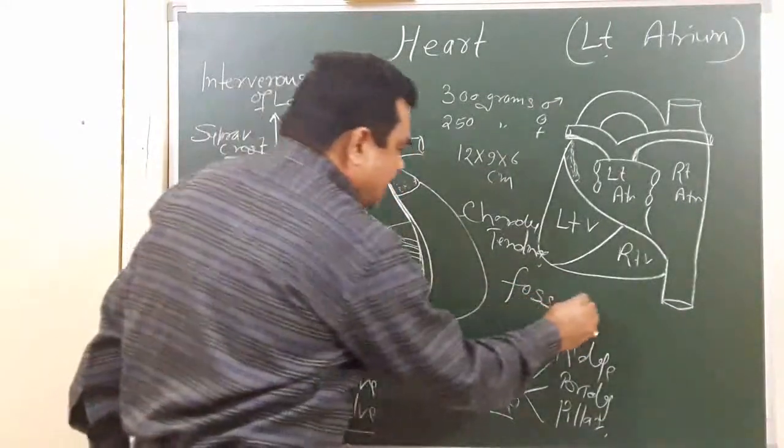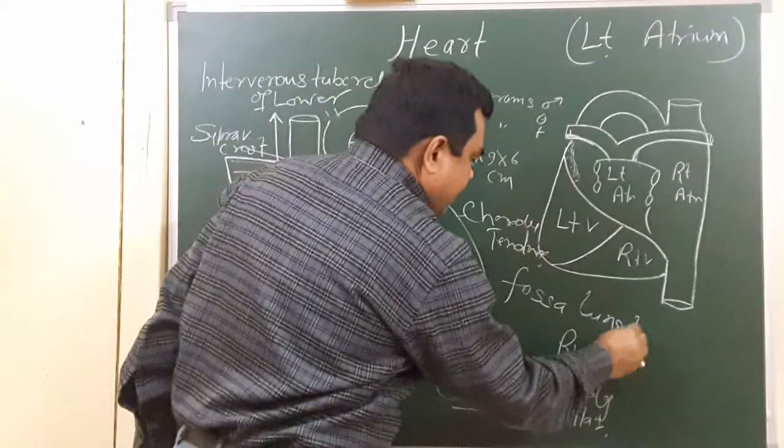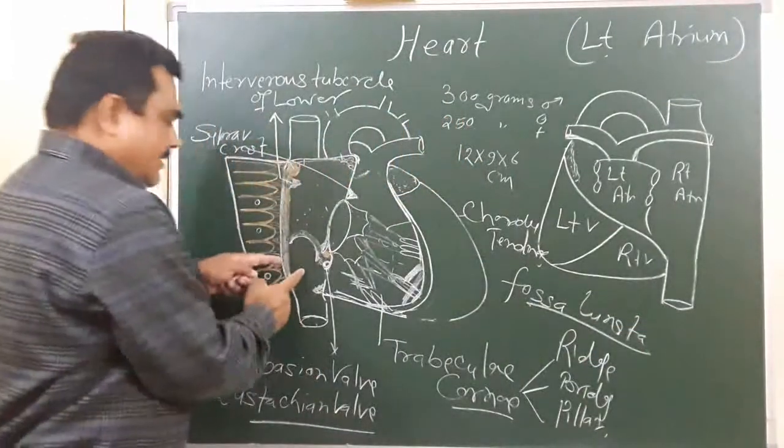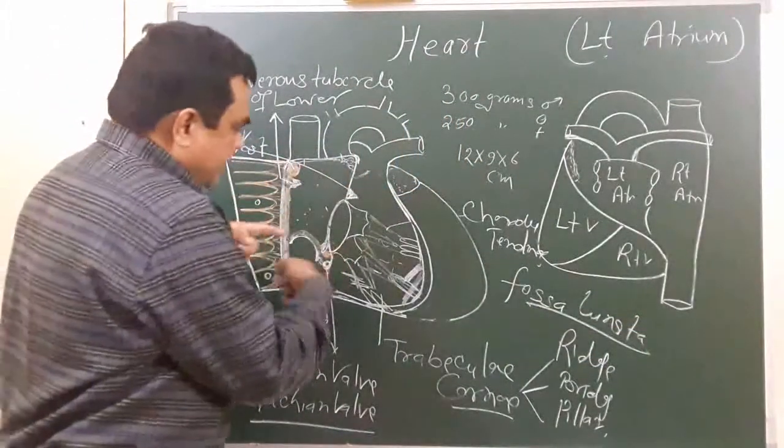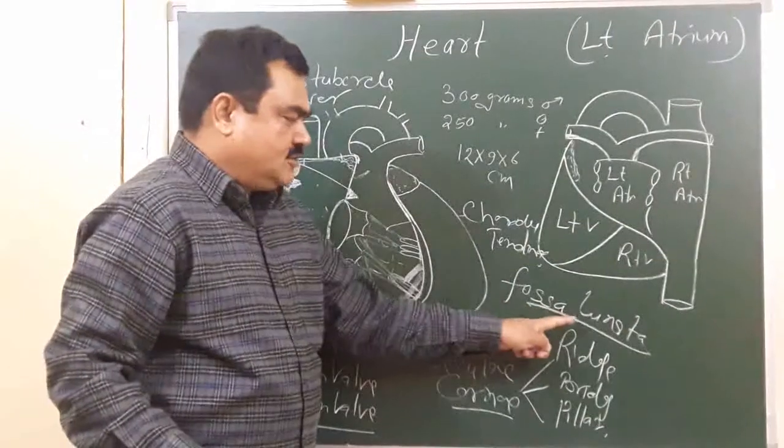Opposite to this there is fossa lunata. So here, this is fossa ovalis, and on the left side this is fossa lunata.